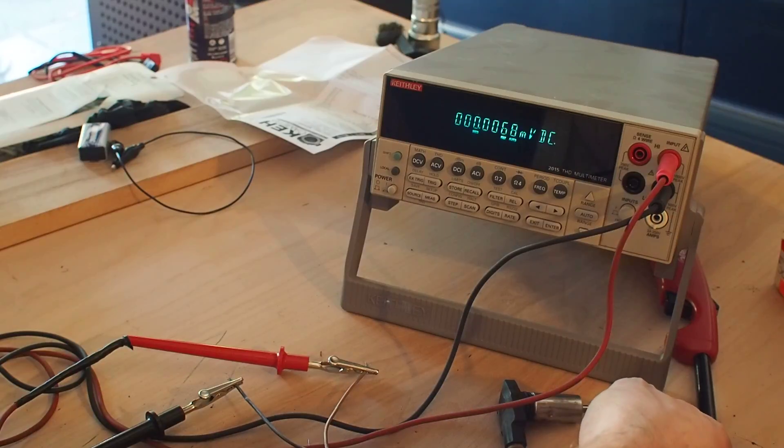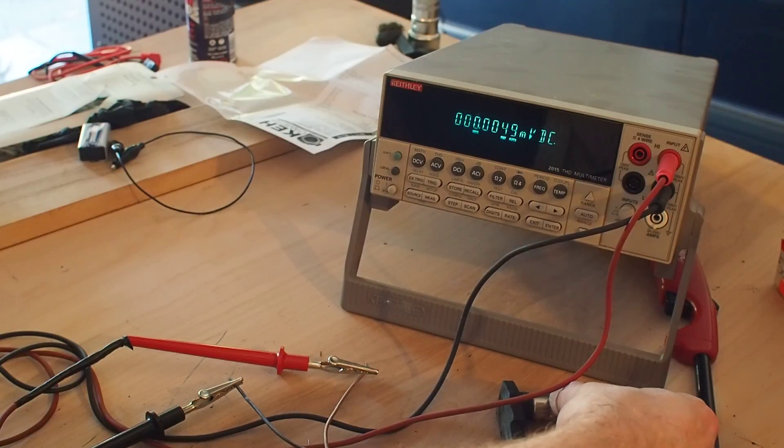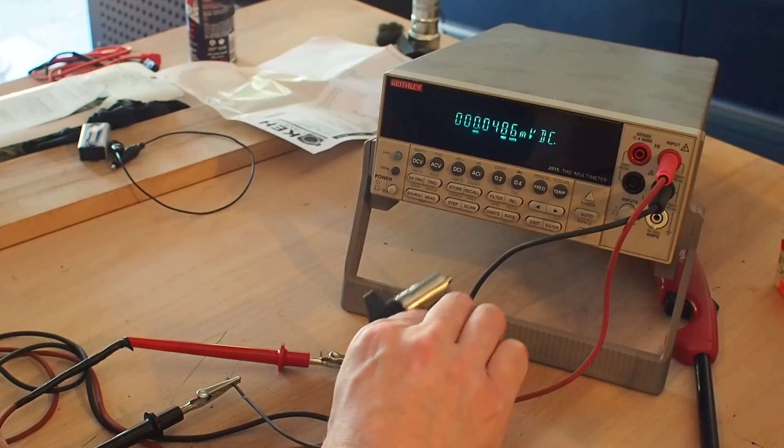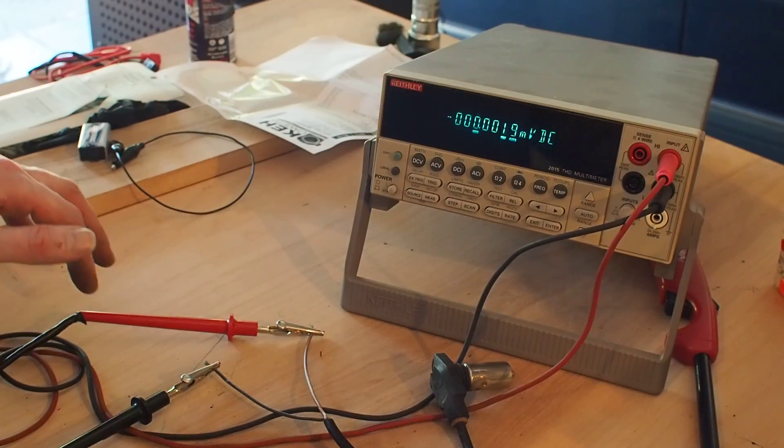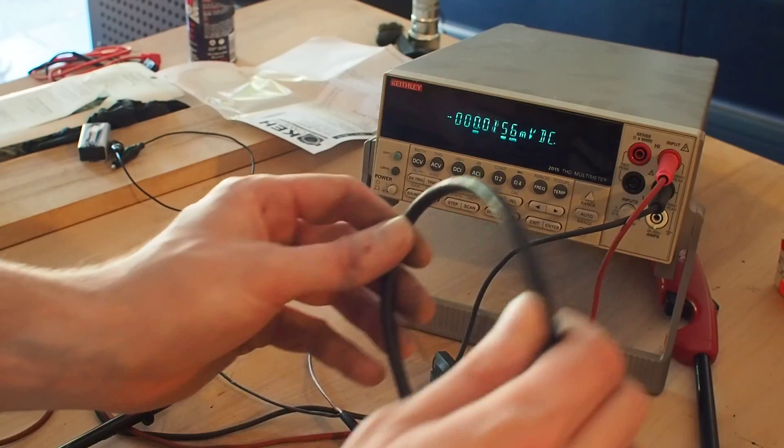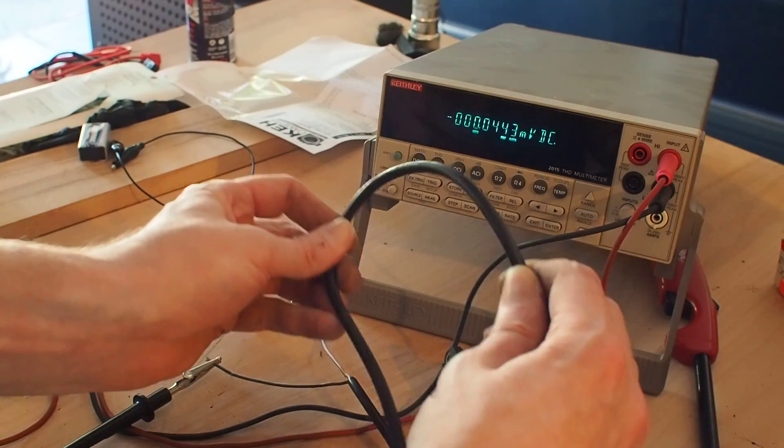So, we can see that it's picking up a little bit of voltage, just because there's a big magnet in the pickup here, so any ambient electrical field is going to pick up a little voltage. That's to be expected.